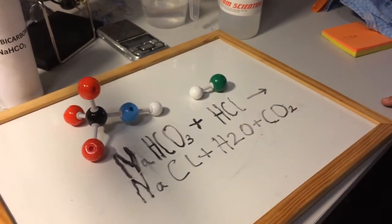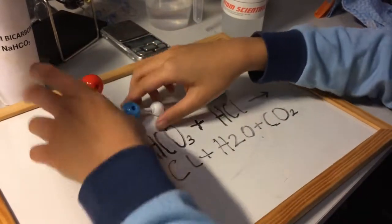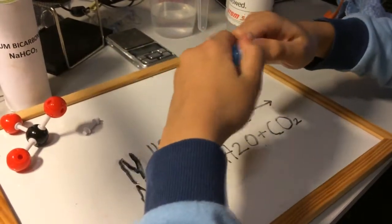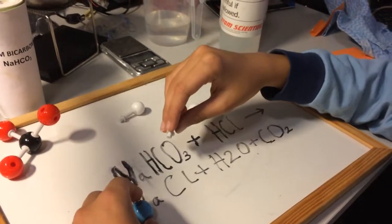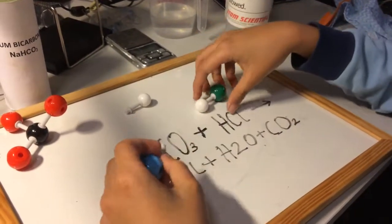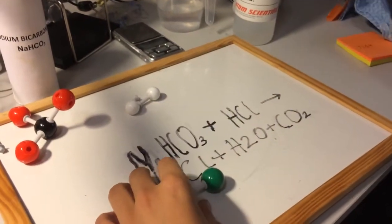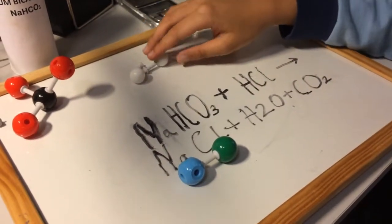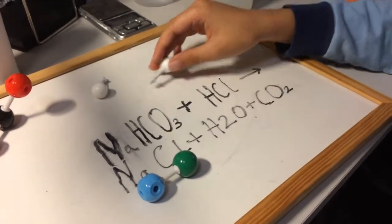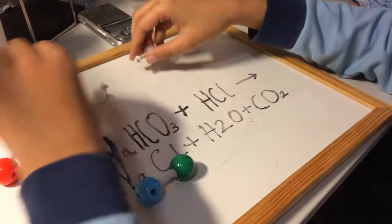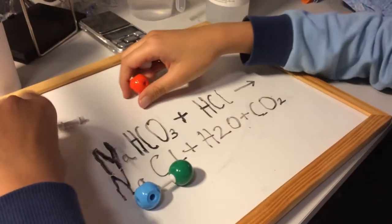Afterwards we got sodium chloride, also known as salt, made of one sodium atom and one chlorine atom. As well as that we got H2O, also known as water. This is made up of two hydrogen atoms and one oxygen atom.